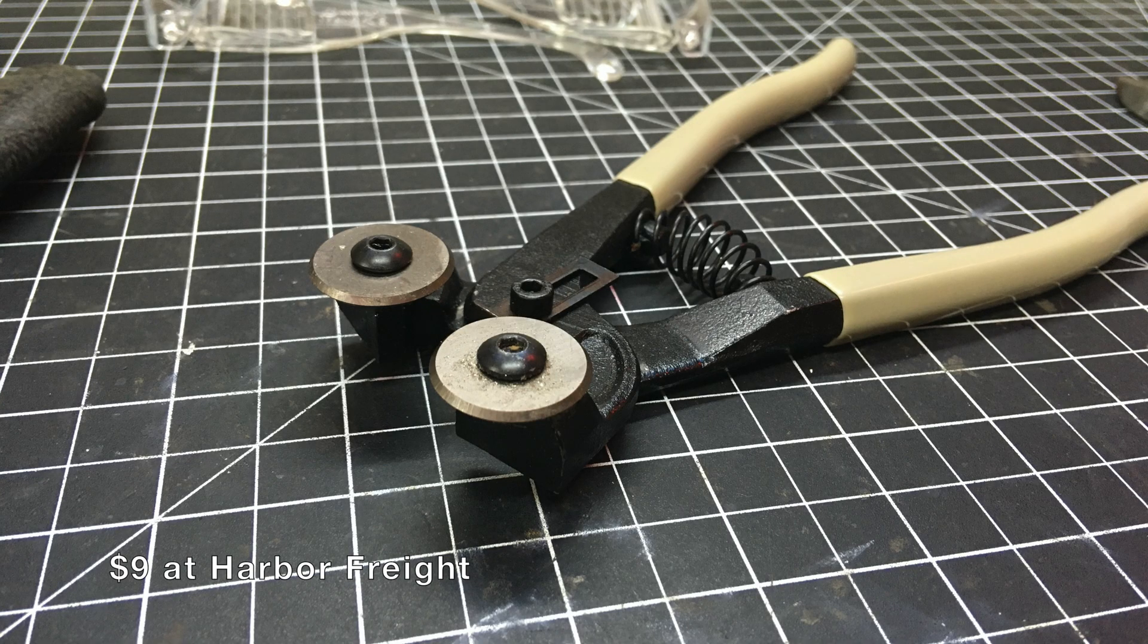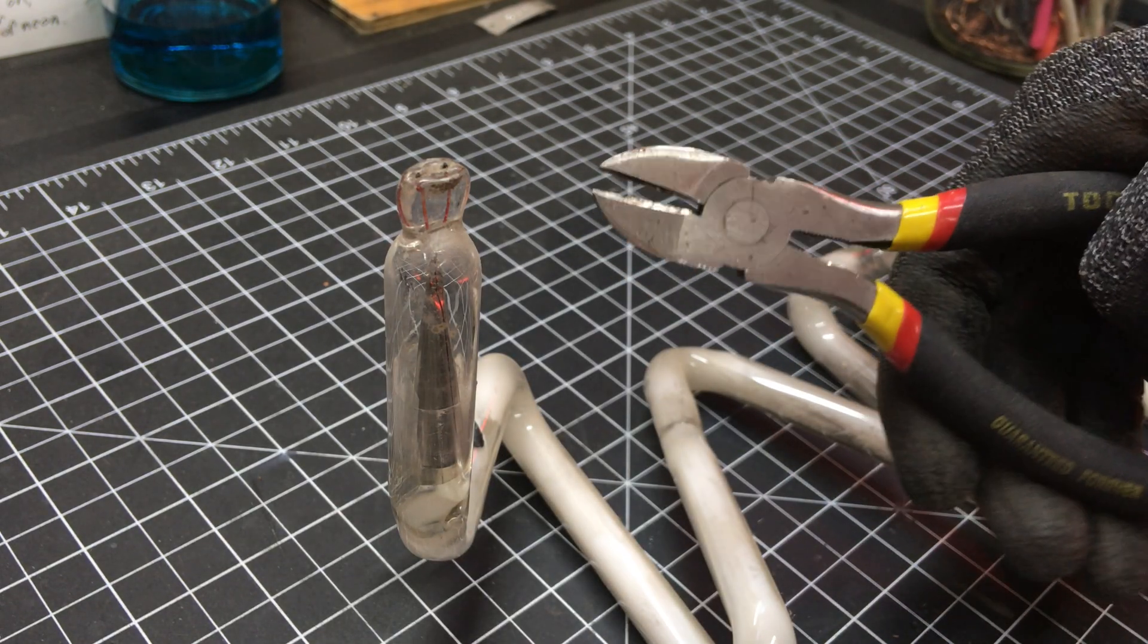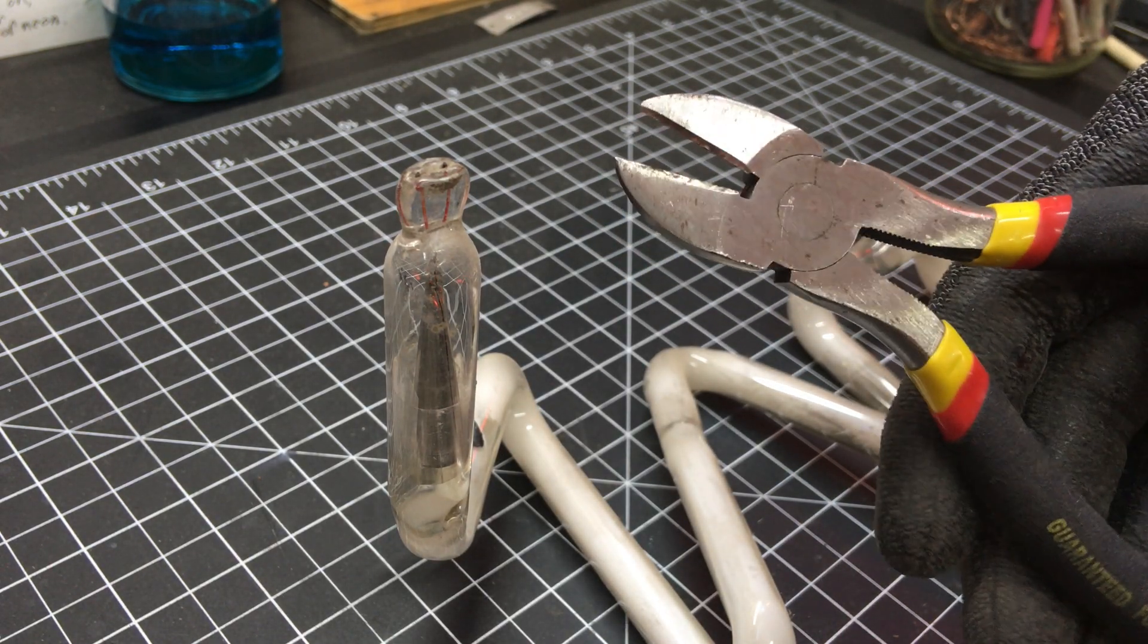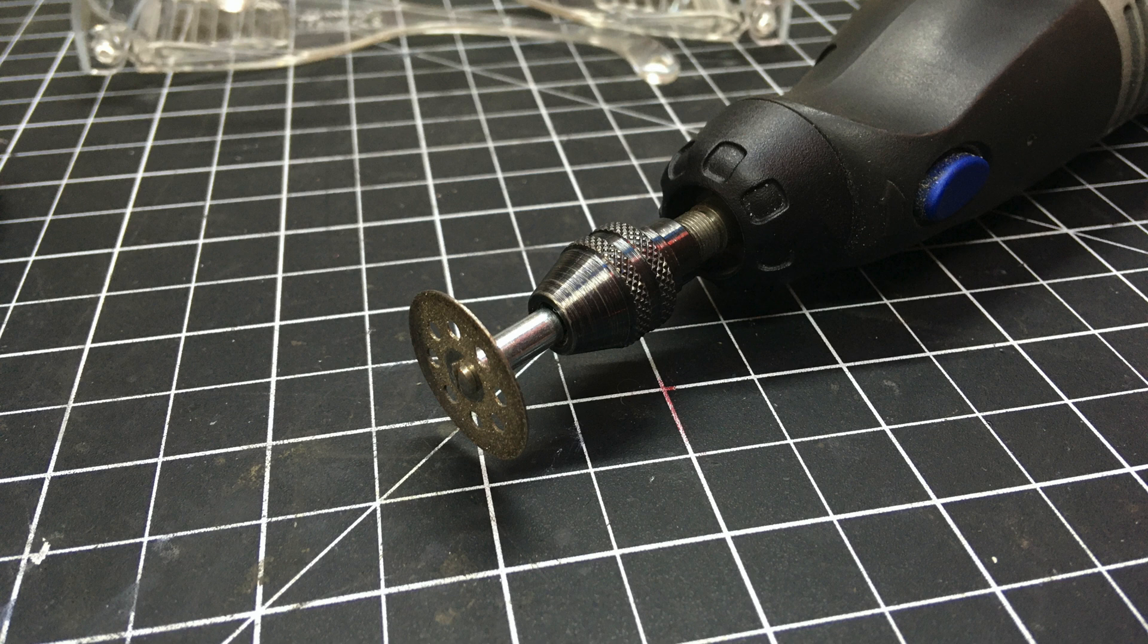They are called tile nippers or mosaic nippers. Diagonal cutting pliers are more prone to sliding on the glass, but it is possible to use them. Some like to use a Dremel with a diamond cutting wheel, but this generates fine glass dust, and a respirator should be worn if this method is used.